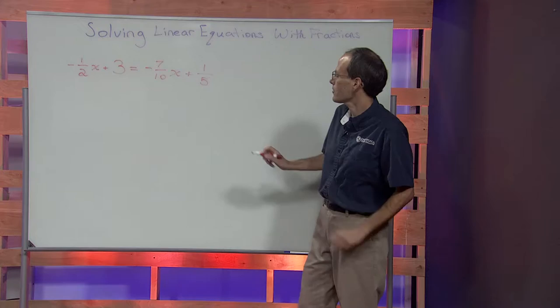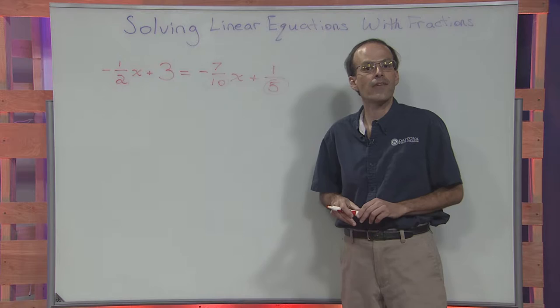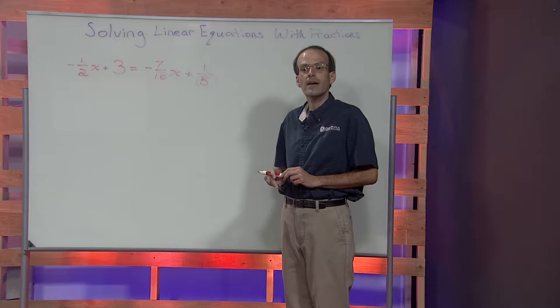There are no parentheses in this problem, so we'll begin by clearing the fractions. We look at every denominator in the problem: two, ten, and five, and find their least common denominator.